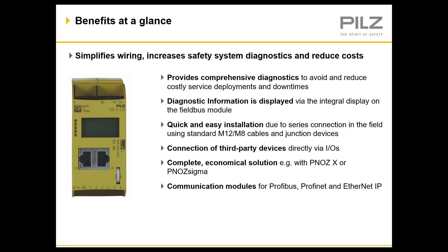At a small integrator, typically two to four engineering and technician resources are scheduled to participate in a factory acceptance test. At $1,000 per resource per day, cutting off a day from a factory acceptance test would mean $2,000 to $4,000 in savings in this example. In either example, the savings quickly pays for itself relative to the low cost of the SDD module, meaning it truly does pay for itself.